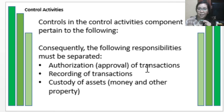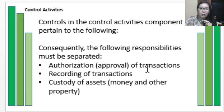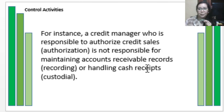Consequently, the following responsibilities must be separated: the authorization of transactions should be handled by a different person from those recording transactions, and also from those with custody of assets. A different person should authorize, a different person should record, and a different person should handle the account or asset, so no single person can perpetrate an error or fraud.